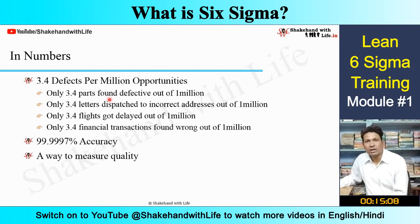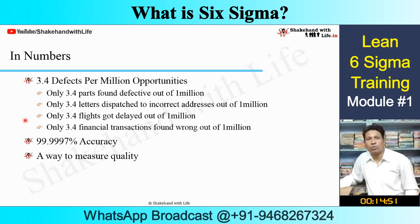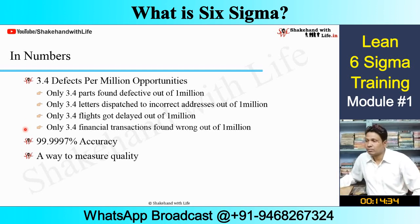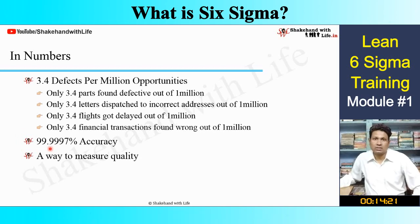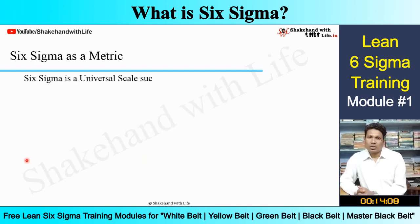Only 3.4 parts found defective out of one million parts manufactured. Only 3.4 letters dispatched to incorrect addresses out of one million letters dispatched. Only 3.4 flights got delayed out of one million flights that took off. Only 3.4 financial transactions found wrong out of one million transactions. In this way, at Six Sigma level your accuracy is 99.9997 percent. Therefore, Six Sigma is a way to measure quality.